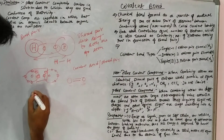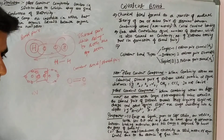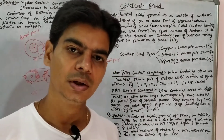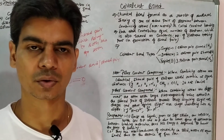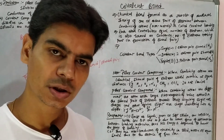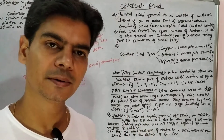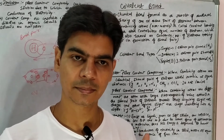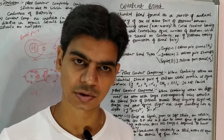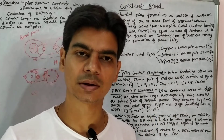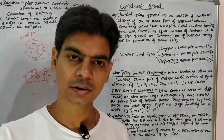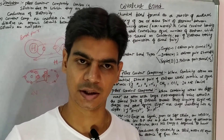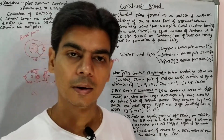Now let's take the example of nitrogen. We know that nitrogen has five electrons in its outermost shell, so nitrogen needs three more electrons to complete eight electrons. So one nitrogen atom will approach another nitrogen atom, and since each nitrogen atom has five electrons and needs three more, both nitrogen atoms will come close to each other and share three electrons each.